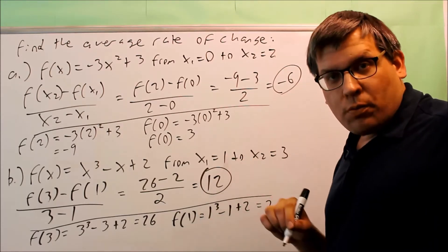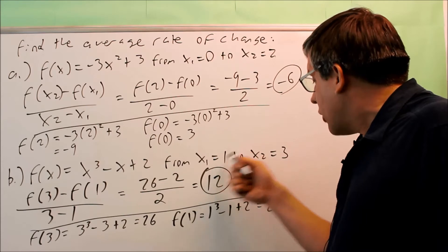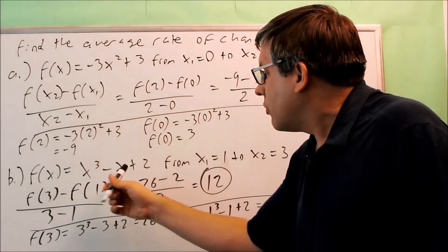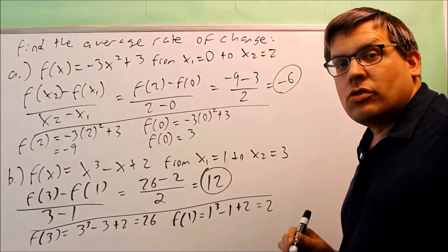So the average slope between the x value of 1 and 3 on this curve right here, this one, is going to be equal to 12.